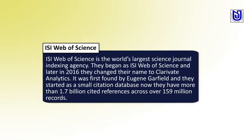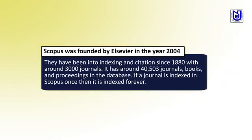Web of Science: ISI Web of Science is the world's largest science journal indexing agency. It began as ISI Web of Science and later, in 2016, changed its name to Clarivate Analytics. It was first founded by Eugen Garfield and started as a small citation database. Now they have more than 1.7 million cited references across over 159 million records. Scopus was formed by Elsevier in the year 2004 and has been in indexing and citation sciences with around 3,000 journals initially. Now it has around 40,500 journals, books, and proceedings in the database. If a journal is indexed in Scopus once, it is indexed forever.